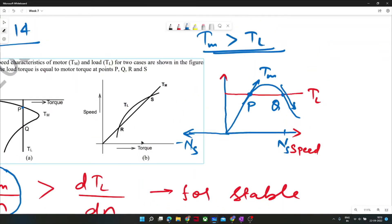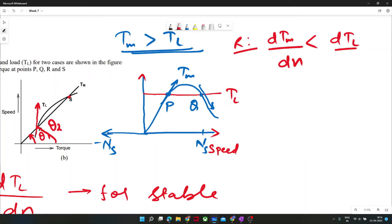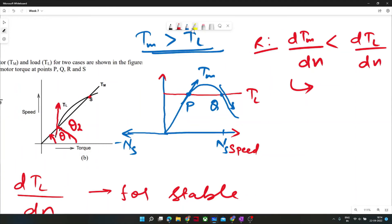Similarly for case B, let's take points R and S. At R, motor torque slope is a straight line, say at angle theta1. But if you take the tangential angle at R, this slope is higher than theta1. So at R, dTm/dn is less than dTL/dn. What would it be - stable or unstable?